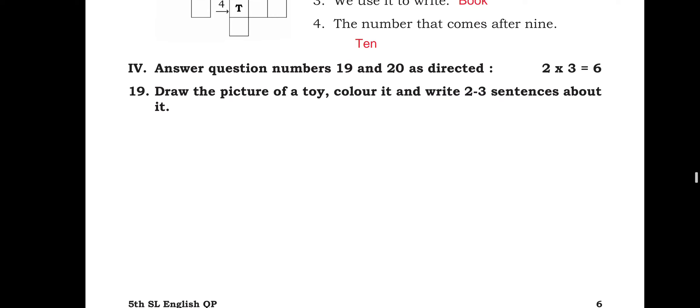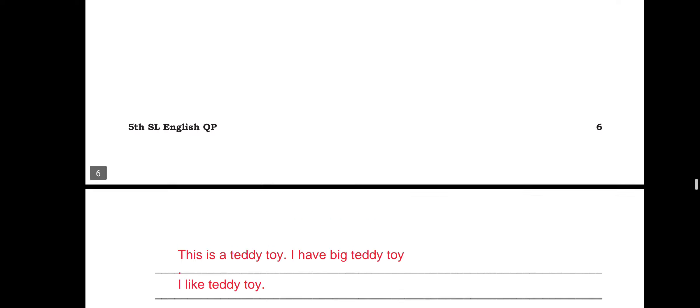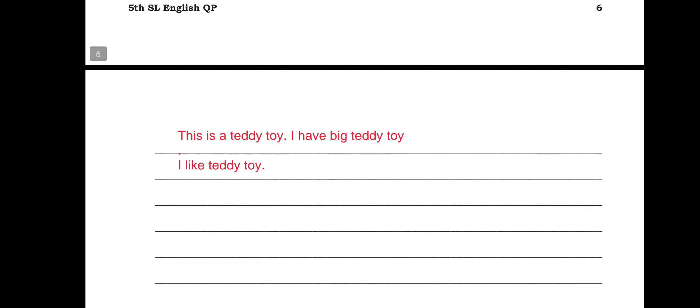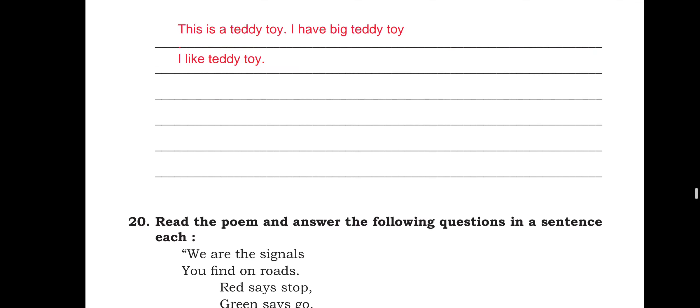Answer the following question numbers 19 to 20 as directed. Draw the picture of a toy. Color it. And write 2 to 3 sentences about it. So you can write about a ball or a toy, whichever you like. You color it and you have to write. So I have written about a teddy. This is a teddy toy. I have a big teddy toy at home. I like to play with my teddy toy.